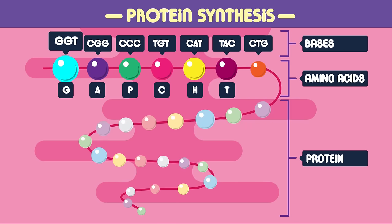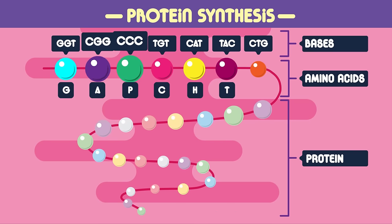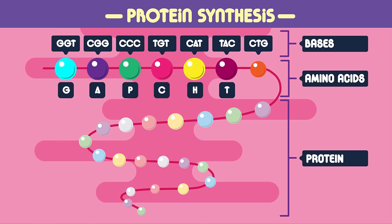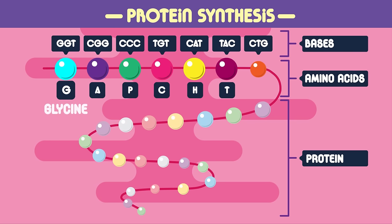A set of three bases in the DNA molecule codes for a particular amino acid. GGT, for example, codes for the amino acid glycine. The three base codes are known as codons, so GGT is a codon for glycine.